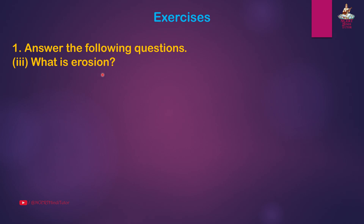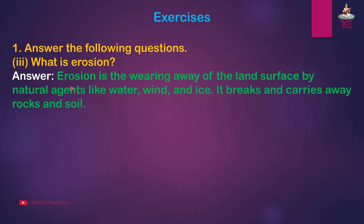Question 3: What is erosion? Answer: Erosion is the wearing away of the land surface by natural agents like water, wind, and ice. It breaks and carries away rocks and soil.